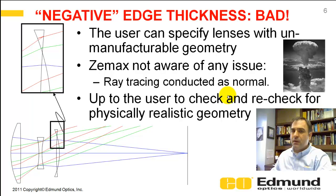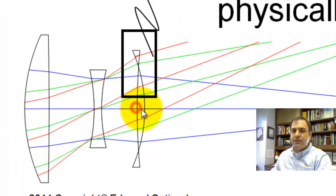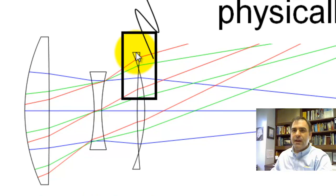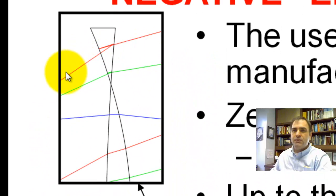So there's some potentials for getting negative edge thicknesses. In particular, if your center thickness, and I just went in on this Cook triplet here and made the center thickness too thin, you can see that this edge thickness here is actually negative. And if you blow this up, you see the rays, they don't care. ZMAX does not care that this is a physically unrealizable lens.